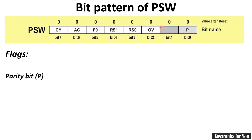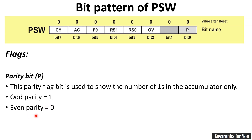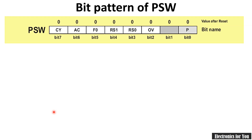The first flag is the Parity flag (P). Parity refers to the number of ones present in the accumulator. The PSW register indicates the number of ones in the accumulator, and this count is known as parity. If there is an odd number of ones — for example 1, 3, or 5 — the parity bit is set. If there is an even number of ones, the parity bit is reset.